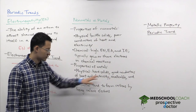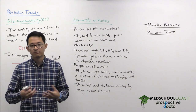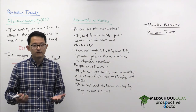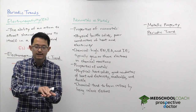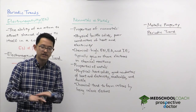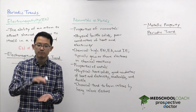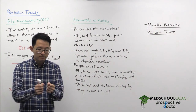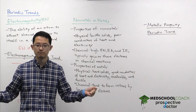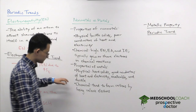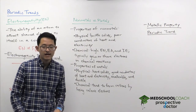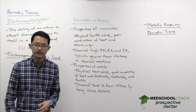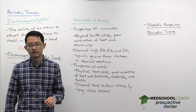Metals also exhibit malleability and ductility. Malleable means compounds are able to deform under compressive stress — if you compress metal, it deforms to form flat sheets. Ductility is the opposite: applying tensile forces pulling on both sides means you can stretch metals into wires without breaking. For chemical properties, metals in general have simple reactions — they want to achieve noble gas configuration by losing valence electrons and forming cations.